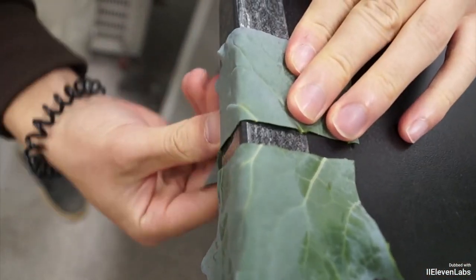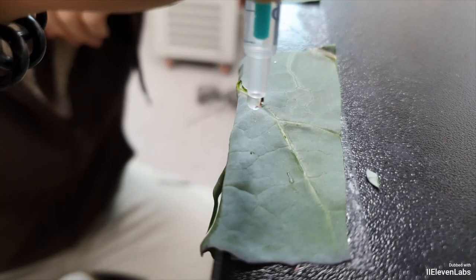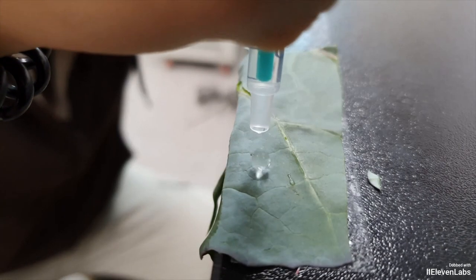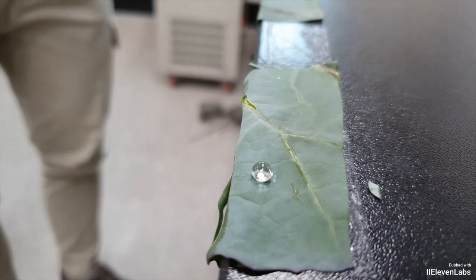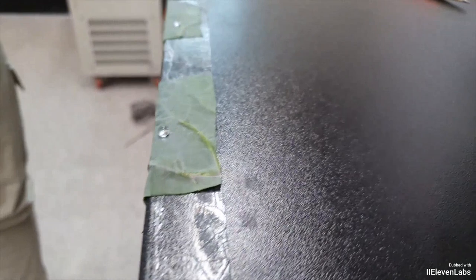When you drop water using a syringe, releasing it slowly from one centimeter above will allow you to create evenly sized droplets. Repeat the experimental method on at least three broccoli leaves to ensure reliable results.